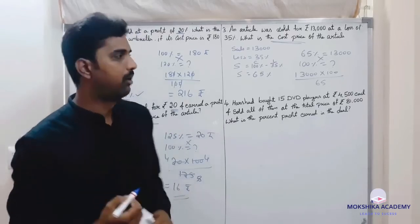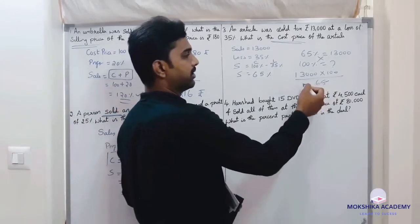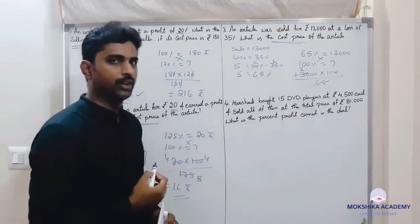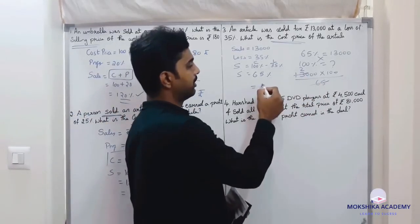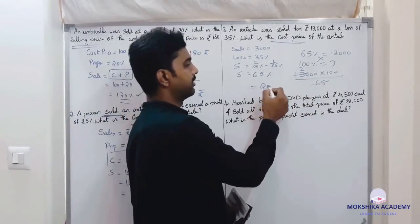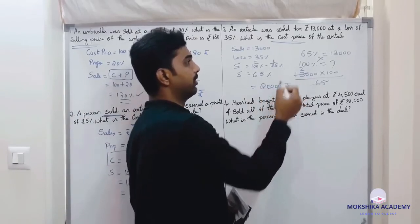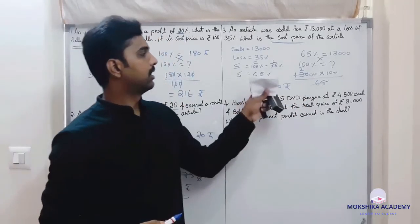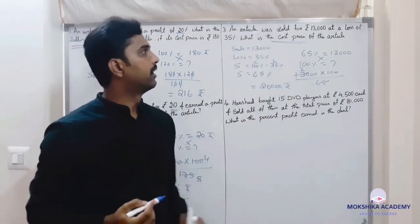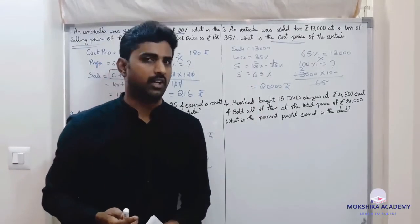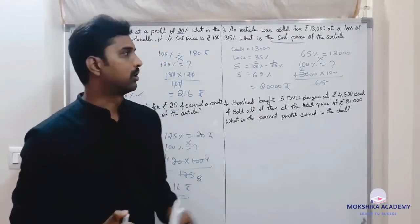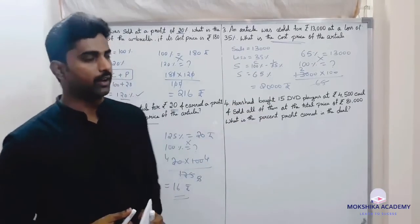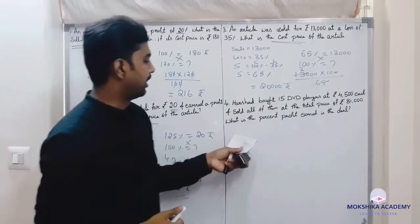65 percent is 13,000. So 100 percent works out to 20,000. The cost price is rupees 20,000 and the sales price is rupees 13,000, so the loss is the difference — rupees 7,000.